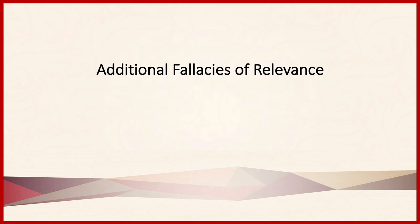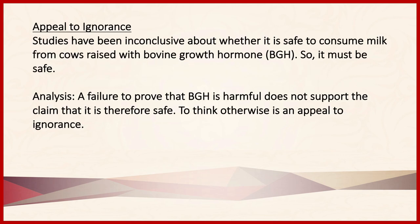The final two fallacies of relevance don't fall under any subcategories. The first of these is an appeal to ignorance. Remember that with appeal to ignorance, nobody is calling anybody else ignorant. Instead, the general form is that somebody says something is true because it hasn't been shown to be otherwise. For example, studies have been inconclusive about whether it is safe to consume milk from cows raised with bovine growth hormone, so it must be safe. A failure to prove that BGH is harmful does not support the claim that it is therefore safe.